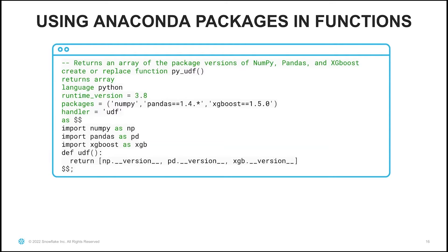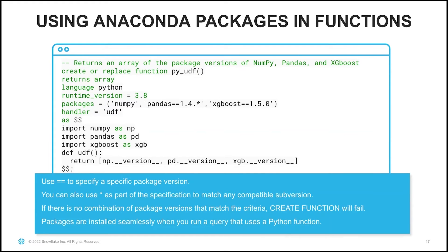When you want to use Anaconda packages in a Python function, you can specify a list of packages in the packages clause. Here I've specified that I want NumPy, Pandas, and XGBoost. I've used == to specify a specific package version for XGBoost, but for Pandas I've specified a wildcard indicating that I'm okay with matching any version of Pandas as long as it starts with 1.4. If there's no combination of package versions that match the criteria specified, however, the CREATE FUNCTION statement will fail.